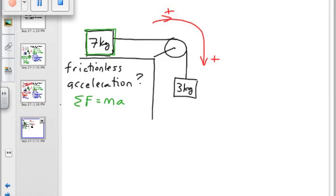What forces are on the 7 kilogram object? Gravity. Normal force. And tension.